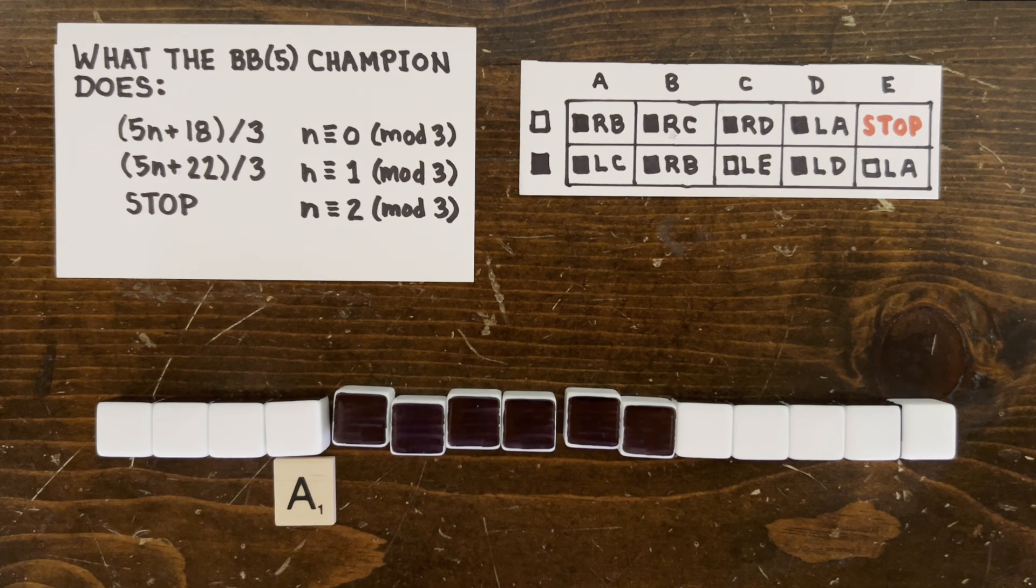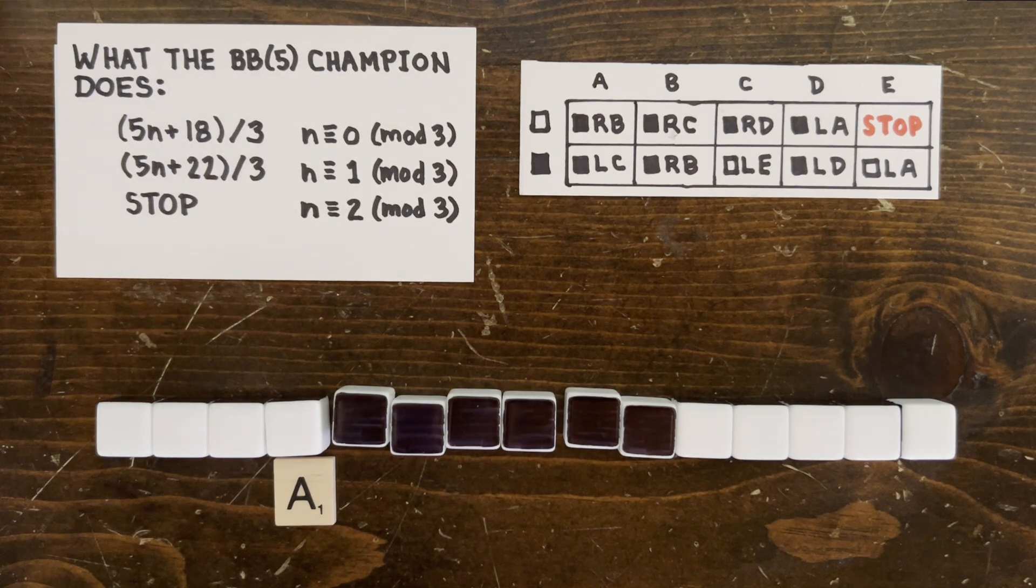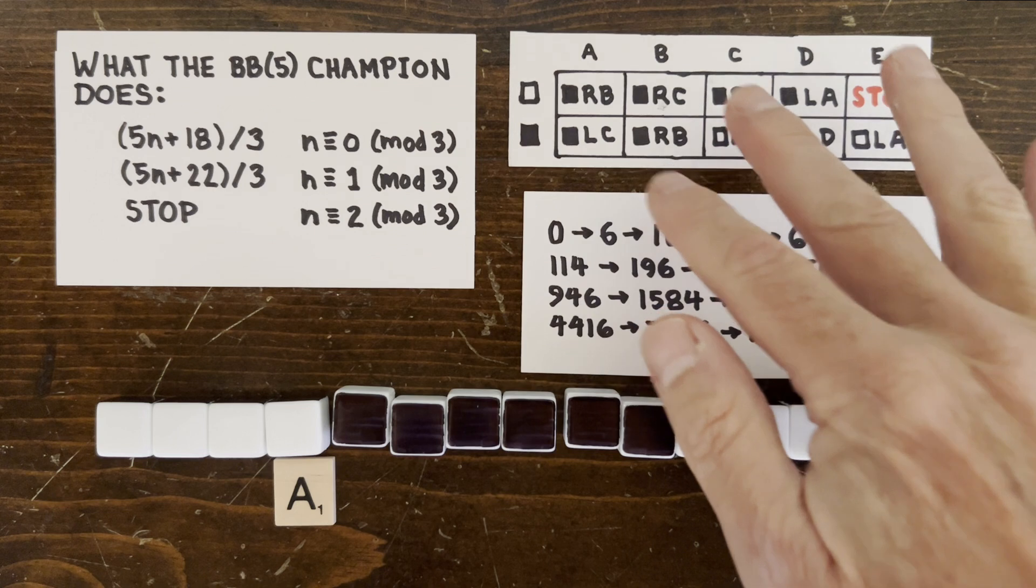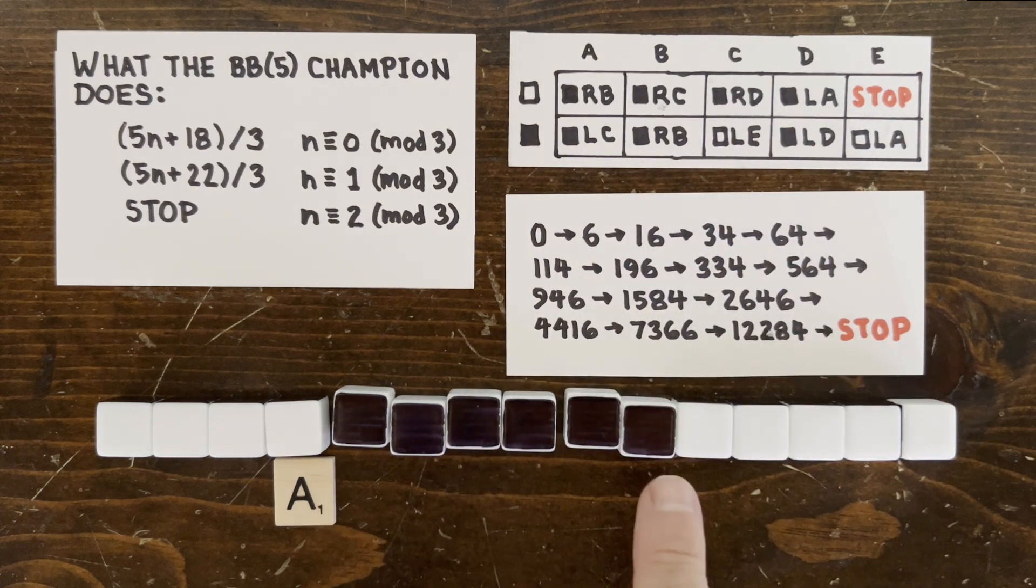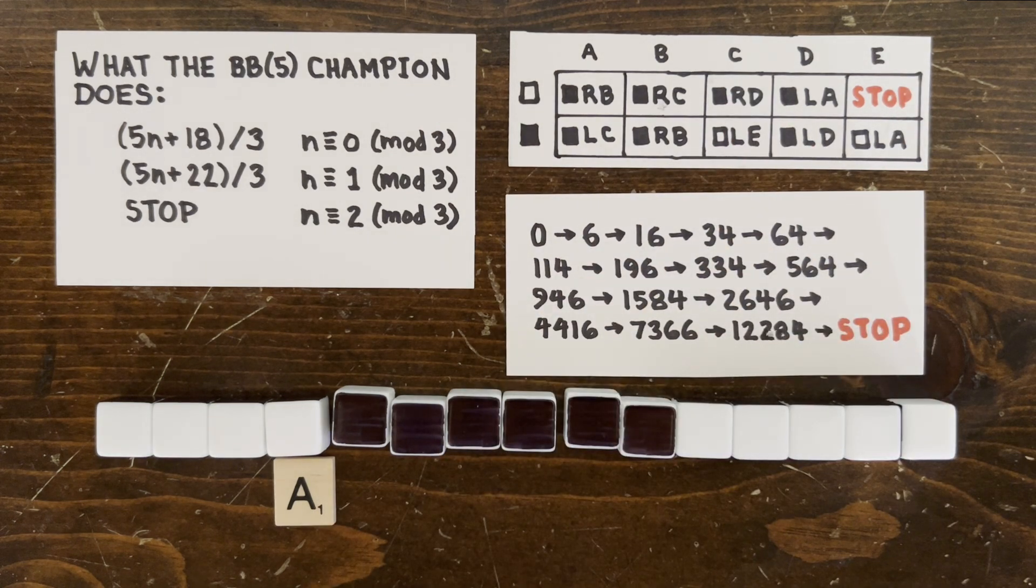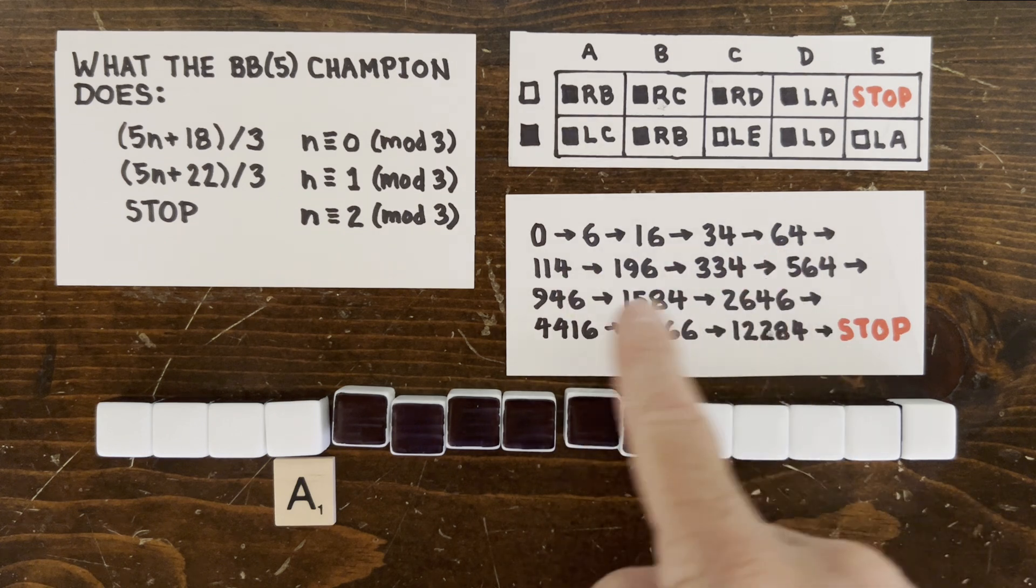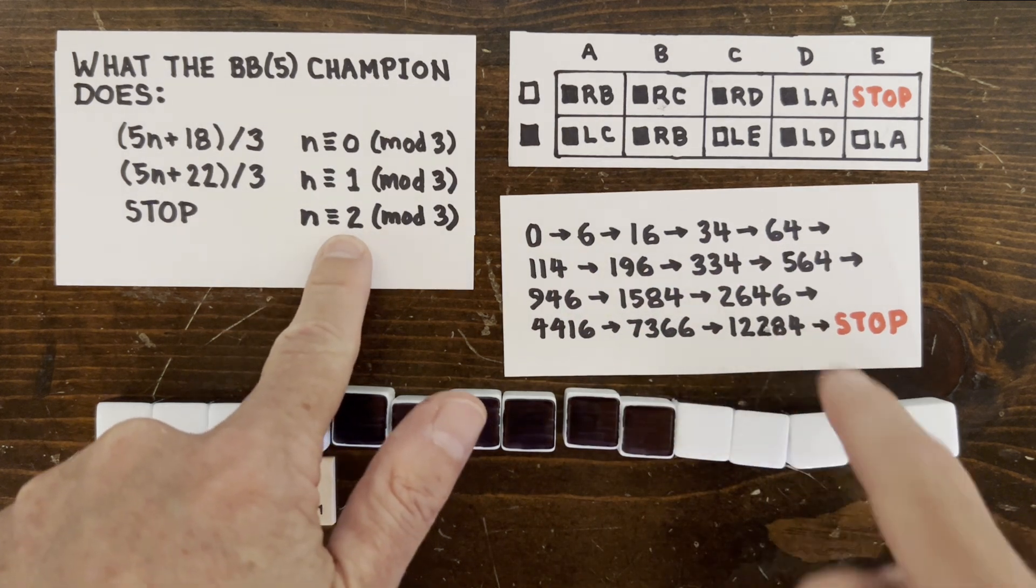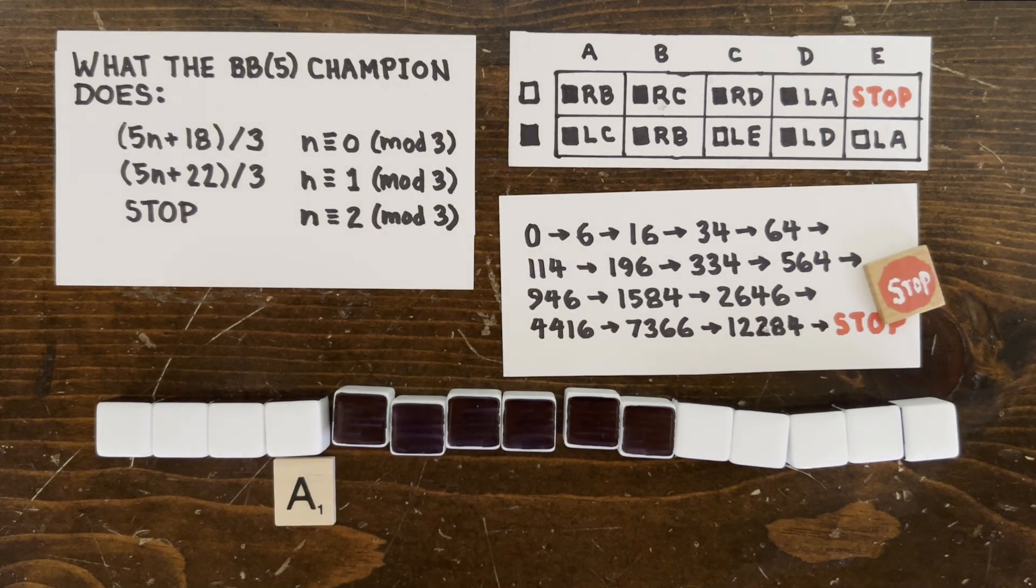The blank tape represents n equals 0, which is divisible by 3, so this rule replaces n with 18/3, or 6, which is represented by these six black cells on the tape. And if we keep going, the program computes this sequence, which seems like it's going to go on forever, but eventually the program hits a number with a remainder of 2 when divided by 3, so it stops.